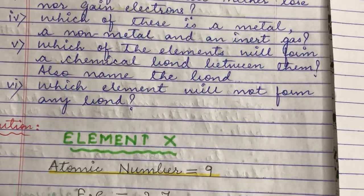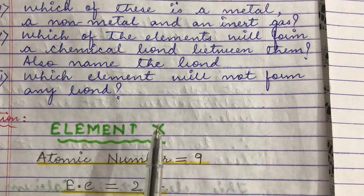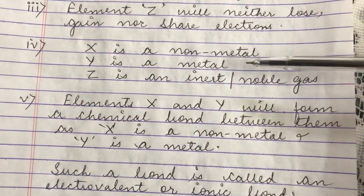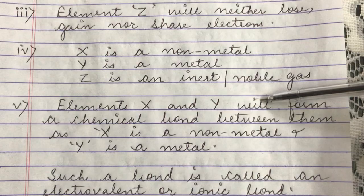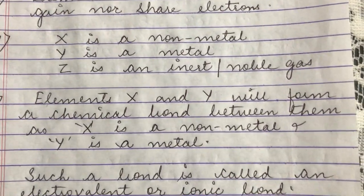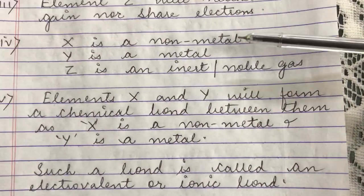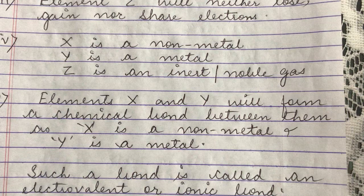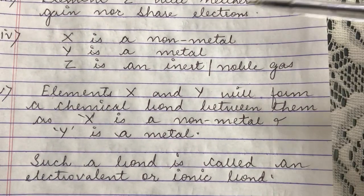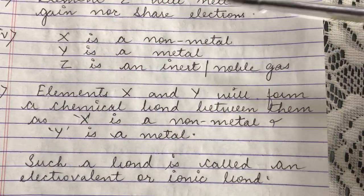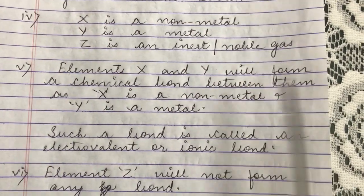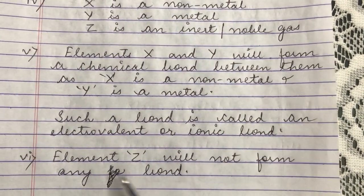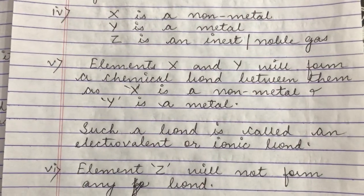The next important question: which of the elements will form a chemical bond between them, and name the bond? Element X is a non-metal, element Y is a metal, and Z is an inert gas. Inert gas is not involved in bond formation as it is already stable, so there is no chemical bond with element Z. But element X and Y — being a non-metal and metal respectively — will form a bond. The bond formed between a metal and a non-metal is known as an ionic or electrovalent bond, formed by loss or gain of electrons: metal loses, non-metal gains.